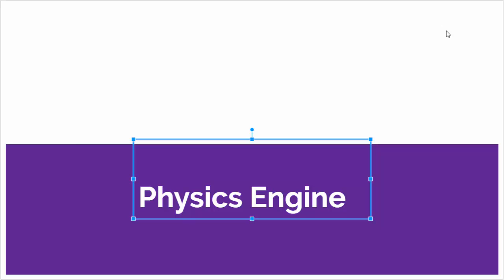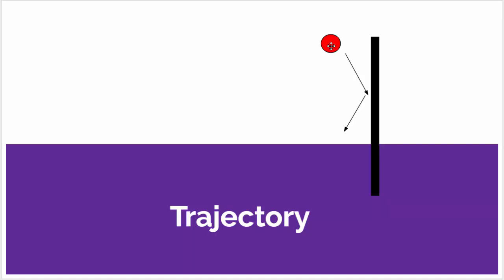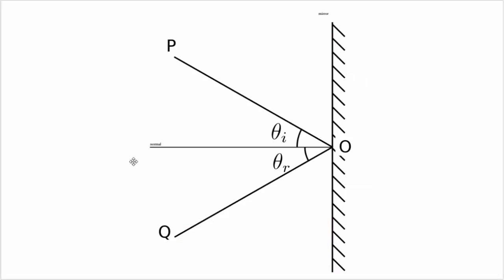Remember all that physics you learned in high school? Well, today that physics is going to come in handy. Imagine a red ball approaching a wall at some angle — we're trying to figure out what the ball is going to look like after it bounces. In physics, we use a free body diagram to demonstrate such an event. The ball starts at point P heading toward the wall and hits at point O. If we draw a line perpendicular to the wall called the normal line, the angle of incidence is defined as theta sub i. An important physics principle is that the angle of incidence is always equal to the angle of reflection, meaning the ball bounces off toward Q at the same angle it approached. We're going to be making use of this principle frequently in our game.